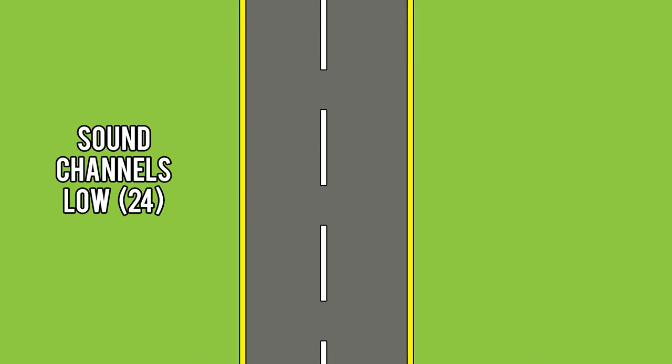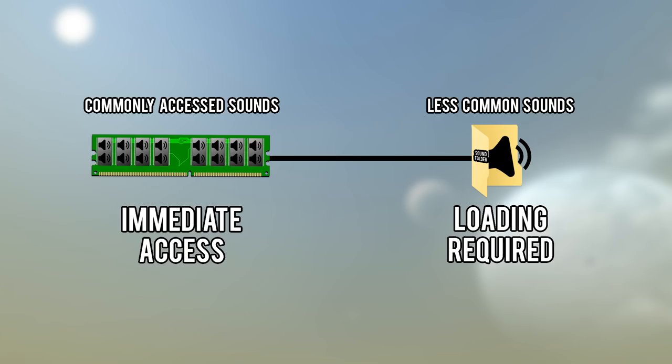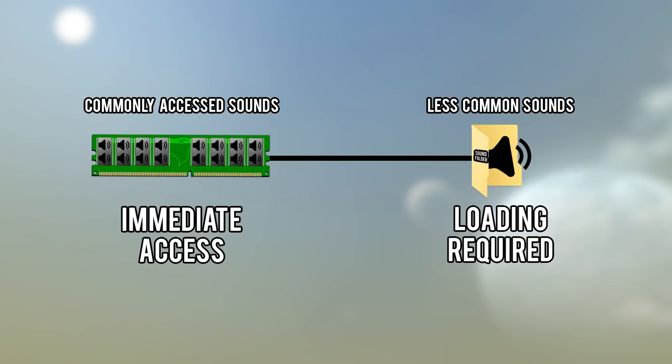Sound channels dictates how many sounds you can hear at once. Think of it like a tunnel — the larger the tunnel, the more cars you can fit through it. The same way, the more sound channels you have, the more sounds you'll hear. Nowadays the high setting shouldn't be too strenuous, especially for people with a dedicated sound card. But lowering this does take a little strain off of your processor if you don't have a sound card. When sounds are cached, some part of them or even the entire sound is stored into memory. The next time these sounds are accessed, they don't need to load up entirely anew — they pull from the sound cache. Having a larger cache allows you to store more sounds to memory and speeds up certain things like loading into a new zone when all the new sounds appear.